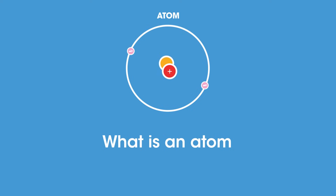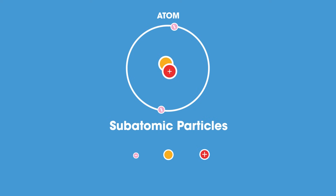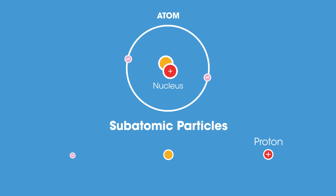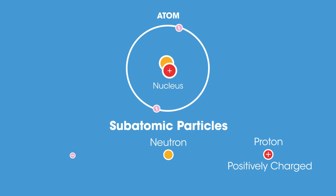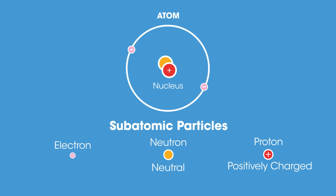Atoms may be tiny particles themselves, but they are made of even smaller particles called subatomic particles. Atoms consist of a central nucleus that contains protons and neutrons. Protons are positively charged and neutrons have no charge, making the nucleus overall positively charged. Much like how the sun has planets orbiting it, the nucleus has electrons orbiting it, and electrons have a negative charge.